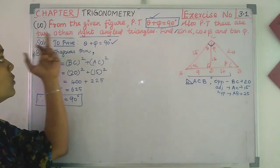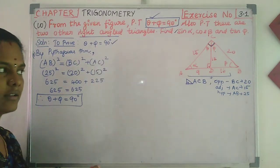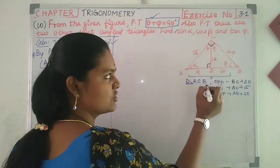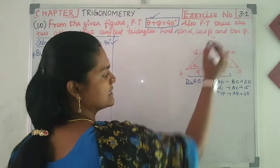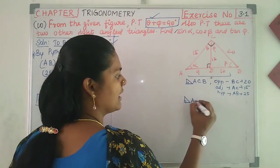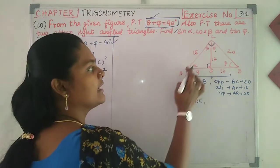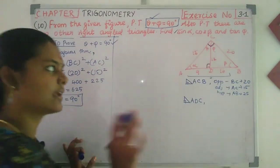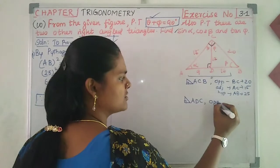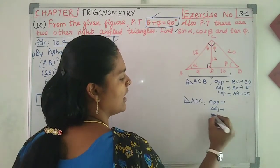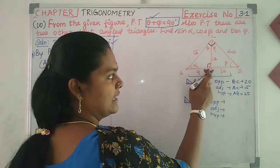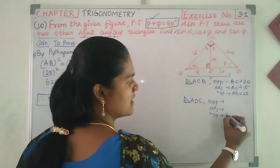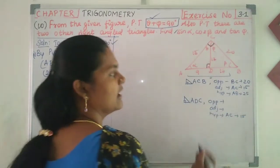Triangle ABC is a right angle triangle. Triangle ADC — looking at the left side right angle triangle. The opposite and hypotenuse: angle 90, the opposite is the hypotenuse. So, hypotenuse is AC, and AC has the value of 15.